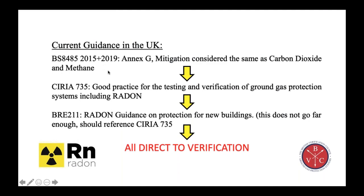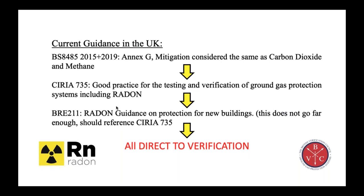Current guidance: at the moment you do not have to have a radon barrier verified or inspected. BS 8485 says it should be considered the same as carbon dioxide and methane, and CIRiA 735 says it's good practice for testing and verification of radon. The problem document is BR211 — that guidance should fundamentally state that radon protection should be verified in accordance with CIRiA 735. If it did, radon barriers would be treated exactly the same as carbon dioxide and methane. That's the problem at the moment, which we're hopefully going to be dealing with.